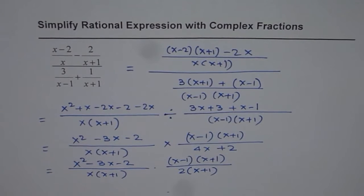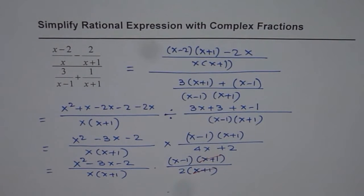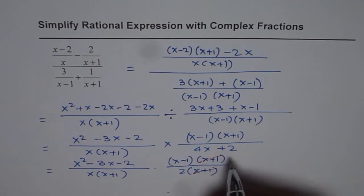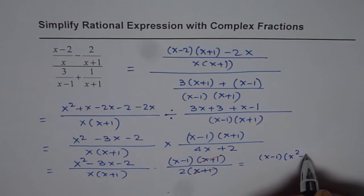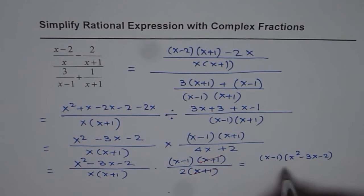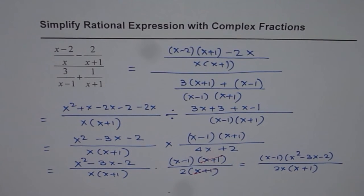Now there are some common terms between numerator and denominator which we can cancel, so this gets cancelled off. And now, we can simplify and write our answer as x minus 1 times x squared minus 3x minus 2, divided by 2x times x plus 1. So that is how we can simplify the given rational expression. Thank you.